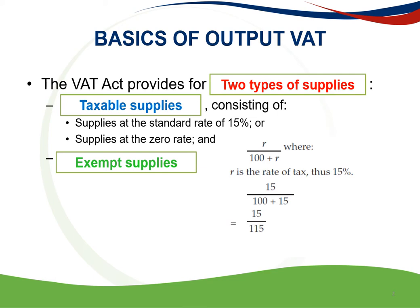So in other words, if you have an amount and you need to determine the VAT component and that amount is inclusive of VAT, you will take that amount and multiply it by 15 over 115. If you have an amount which is exclusive of VAT and you need to determine the VAT component, you take that amount multiplied by 15 over 100.